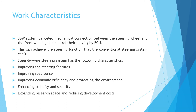Next are the work characteristics. The SBW system cancels the mechanical connection between the steering wheel and the front wheels and controls their movement by the ECU. This can achieve the steering function that the conventional steering system cannot. The steer-by-wire steering system has the following characteristics: improving the steering features, improving the road sense, improving the economy efficiency and protecting the environment, enhancing the stability and security, and expanding the research space and reducing the development cost.